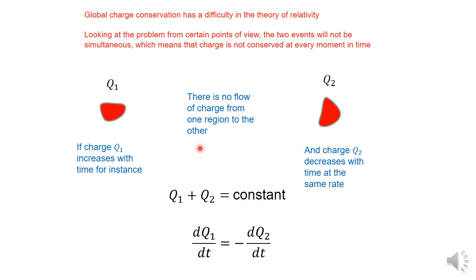They may be simultaneous from one point of view, and not from another point of view. So if they're not simultaneous from a certain point of view, then the total charge is not constant, because the charge here is increasing, not at the same time as this one is decreasing.